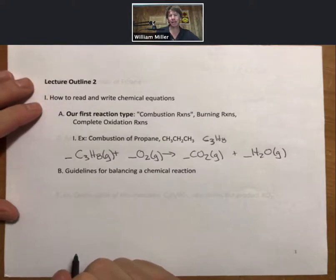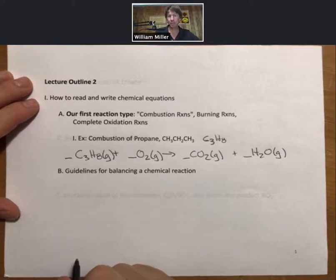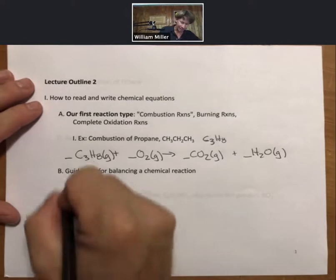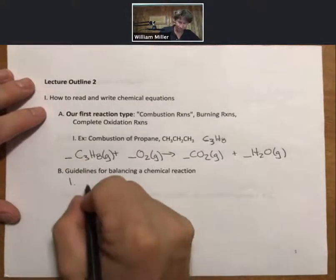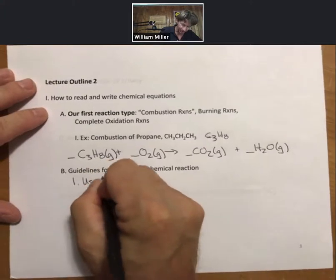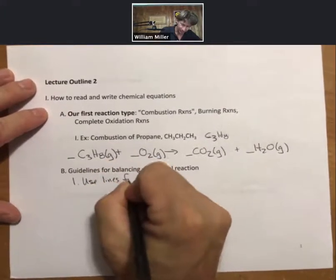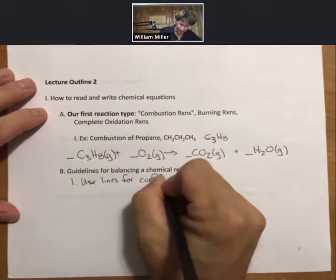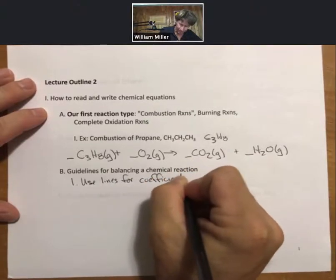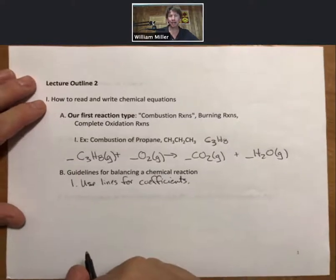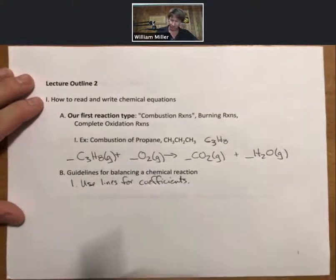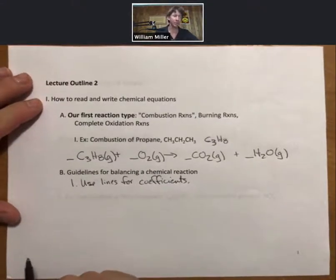And now I'll go over my guidelines for balancing a chemical reaction. Many ways to do this. Make sure you find one that works for you. In my guidelines, the first guideline is to use lines for coefficients, and for me that helps me understand when I'm done because I know each of them will have a number on those lines.